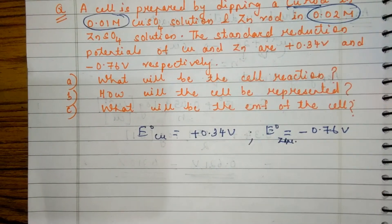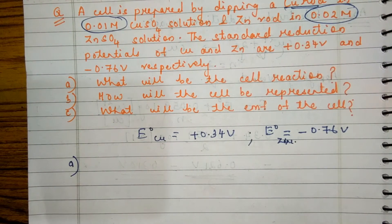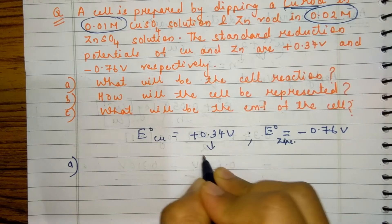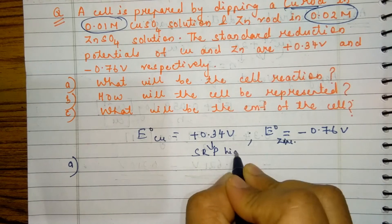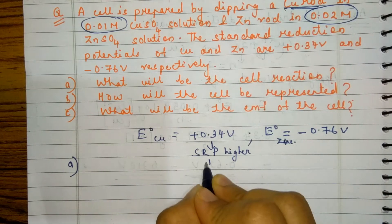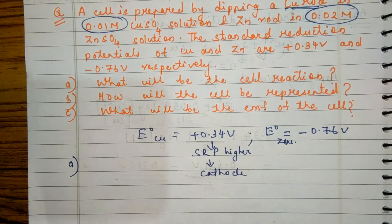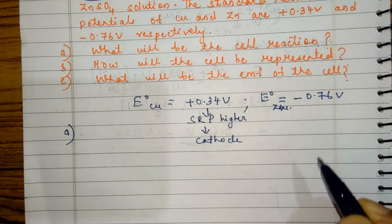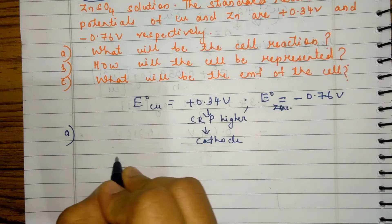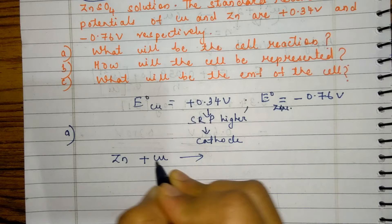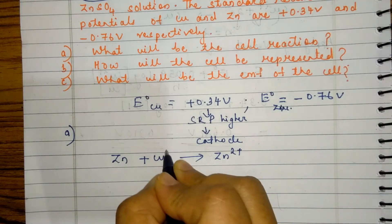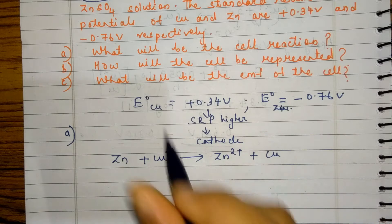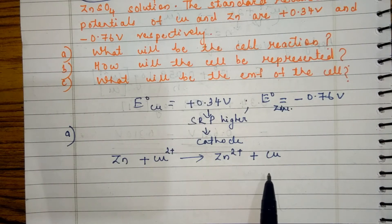The first part asks: what will be the cell reaction? From the standard reduction potentials, copper has a higher value than zinc, so copper behaves as the cathode and zinc is the anode. The cell reaction is: Zn + Cu²⁺ → Zn²⁺ + Cu. Zinc undergoes oxidation at the anode, and copper undergoes reduction at the cathode.